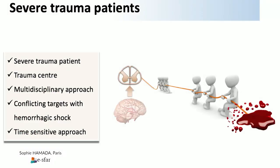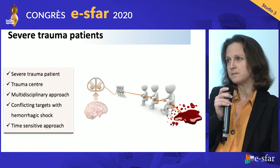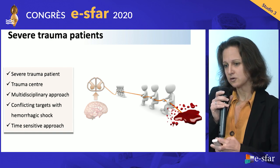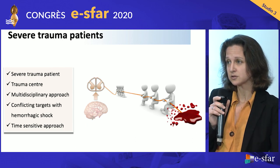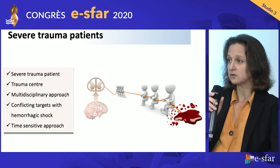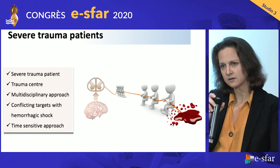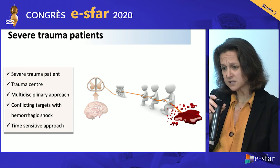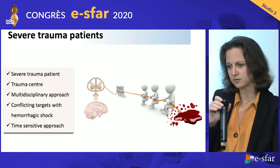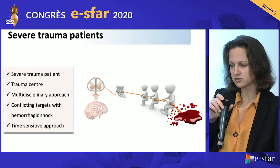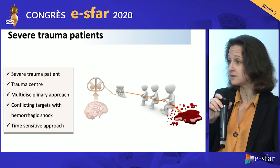The first point is that a spinal cord injured patient is, first of all, a severe trauma patient, and should be managed as a severe trauma patient. So it should be directed to the trauma center to benefit from a multidisciplinary approach. First of all, we have to address the life-threatening injuries, especially hemorrhagic shock, which is in the front of the scene. Sometimes you have conflicting targets when you have hemorrhagic shock, with higher pressure targets for brain and spinal cord injury, and all of this should be done in a time-sensitive approach.